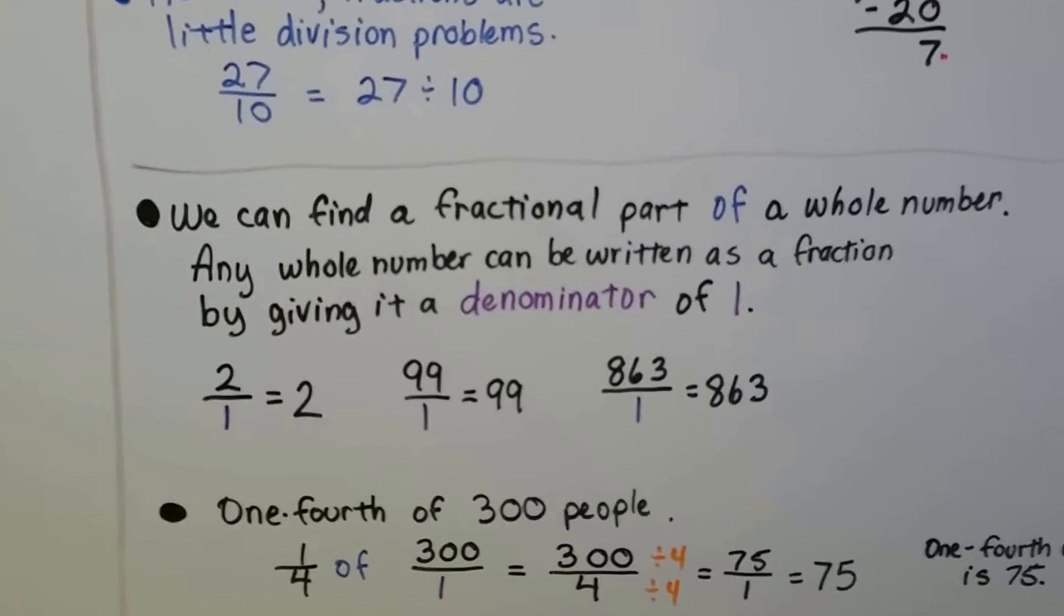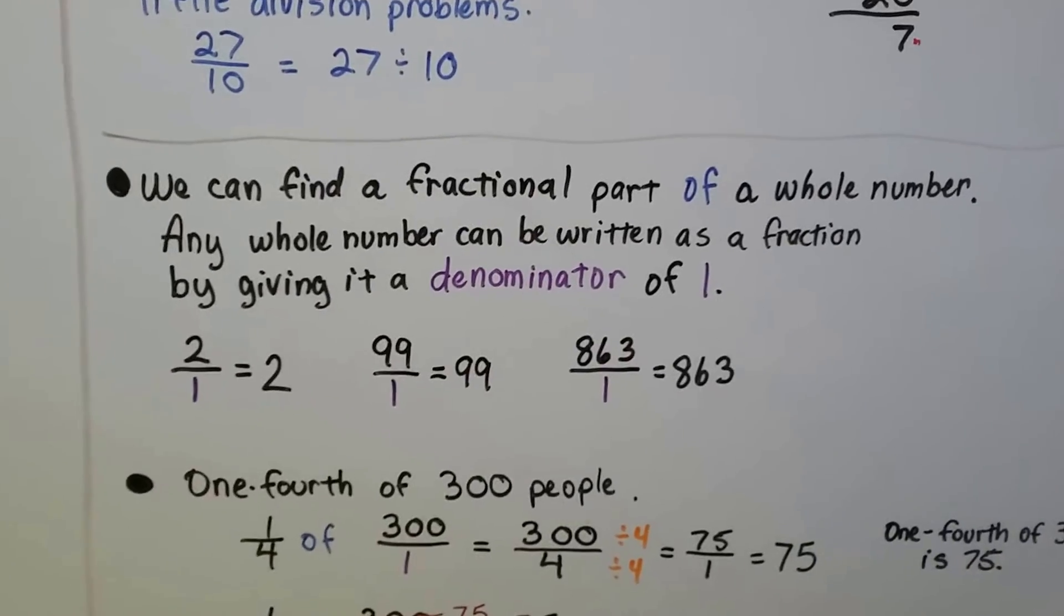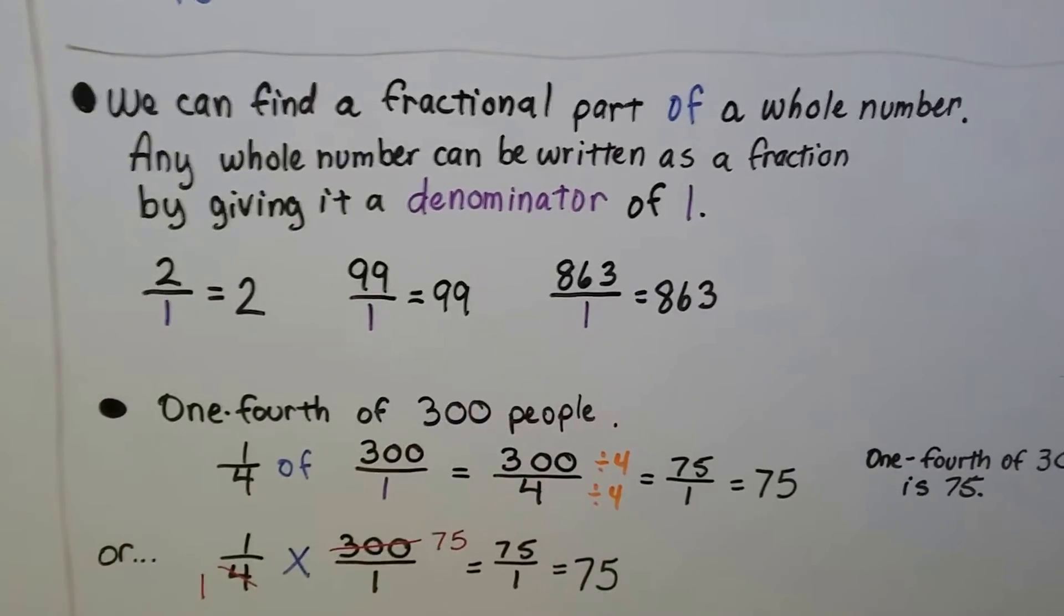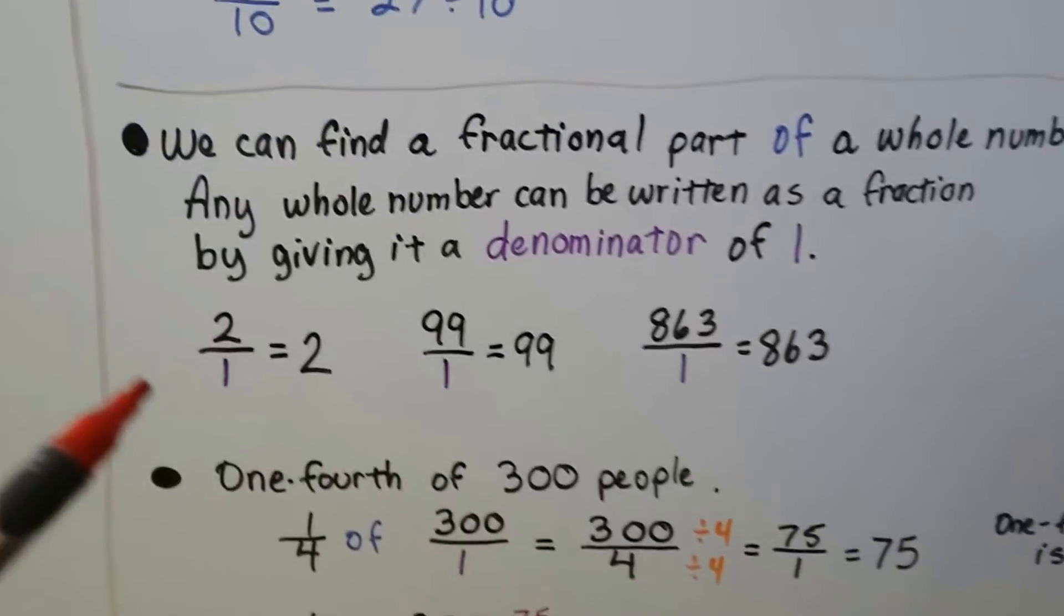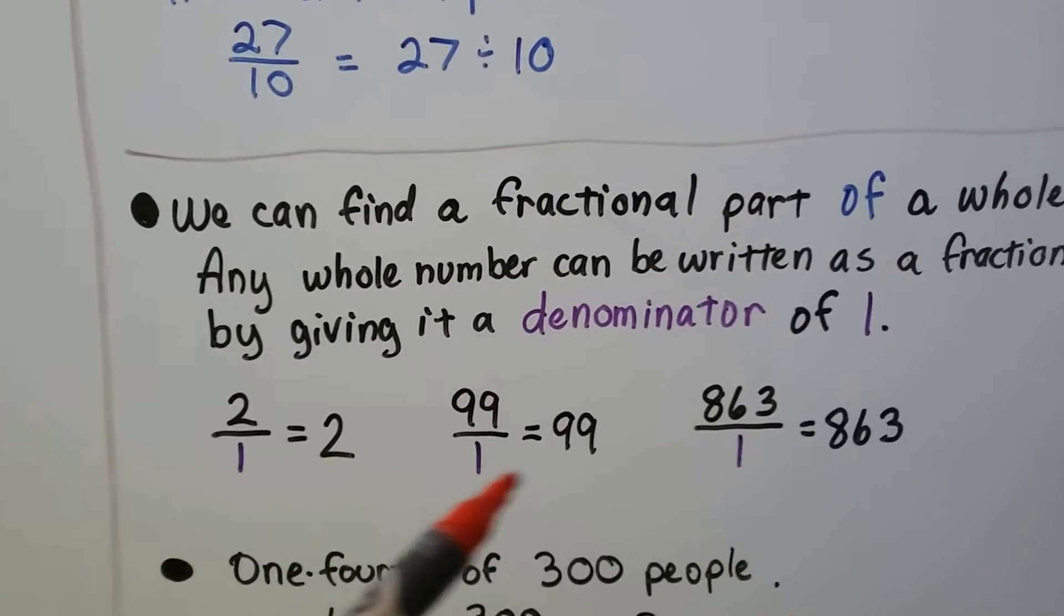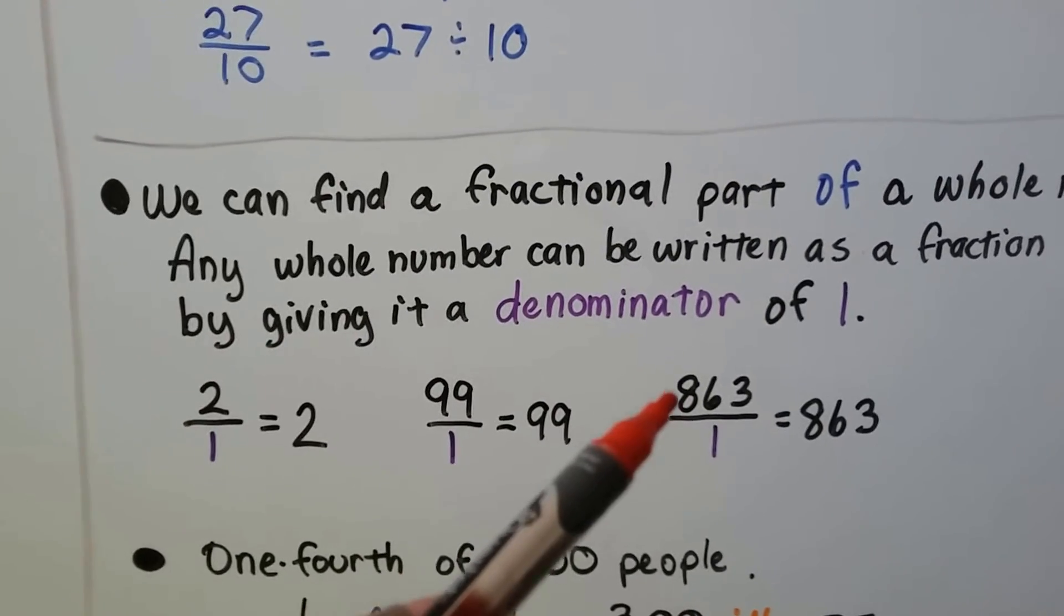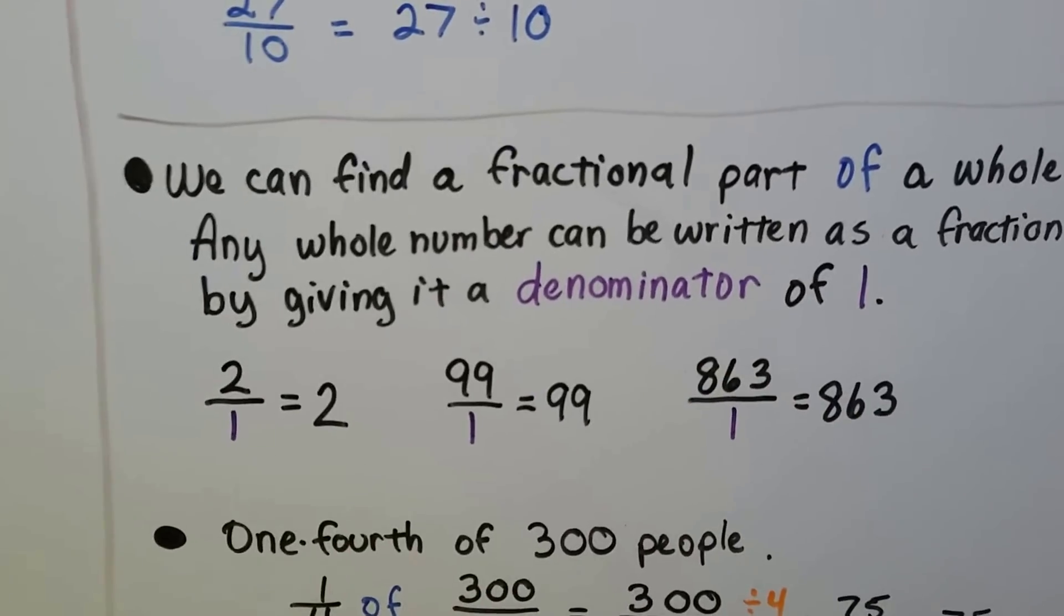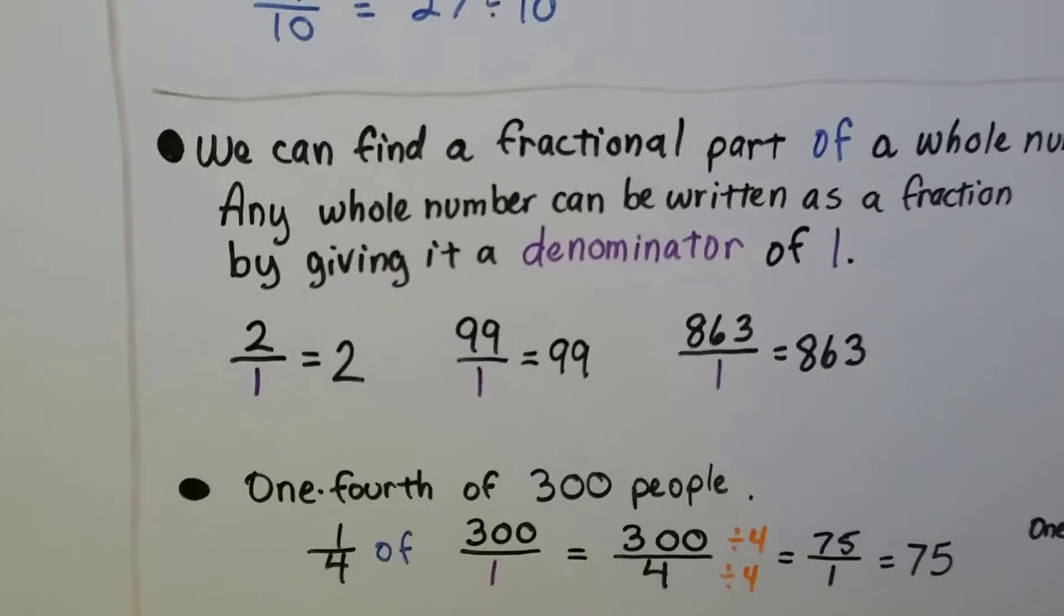Now we can find a fractional part of a whole number. Any whole number can be written as a fraction by giving it a denominator of 1. So 2 over 1 means 2 whole. 99 over 1 means 99 whole. 863 over 1 is 863. It's just a way of making a whole number into a fraction. Just put a 1 underneath it as a denominator.